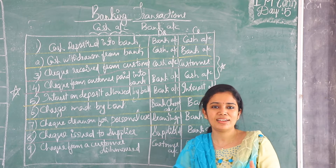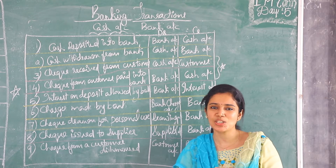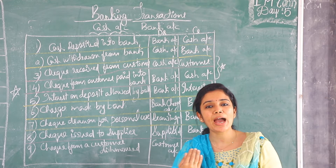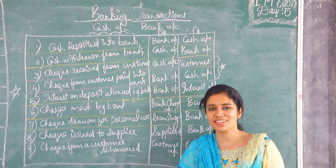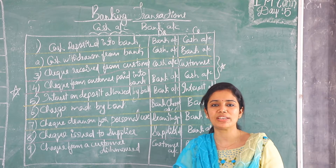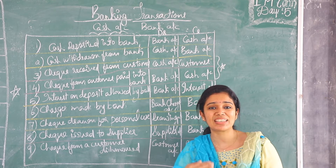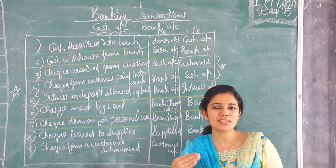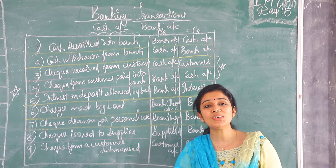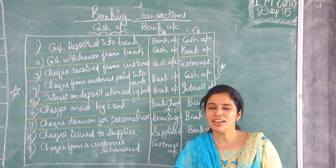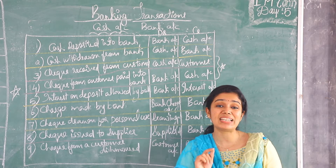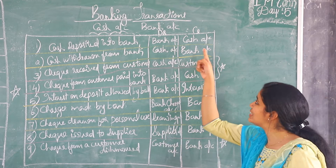The two aspects remain the same — they are cash and bank. Cash deposited into bank. Just try to think what happens to the cash in hand. Try to apply the rule. When cash is deposited into the bank, the cash is going out of the business. Whenever something goes out of the business, it has to be credited when it is a real account, or whenever the value of cash decreases it has to be credited.